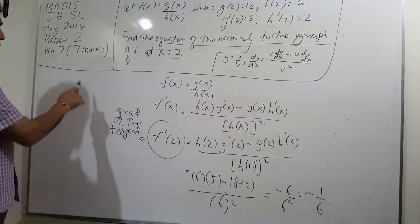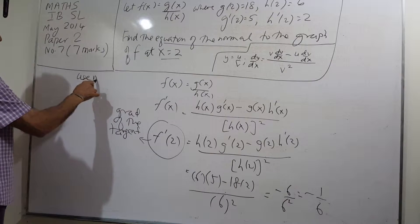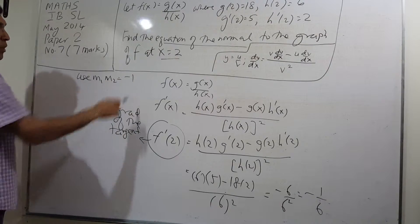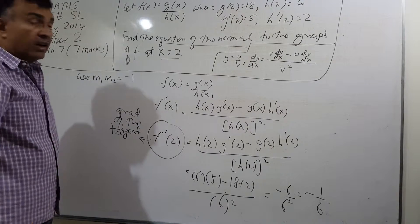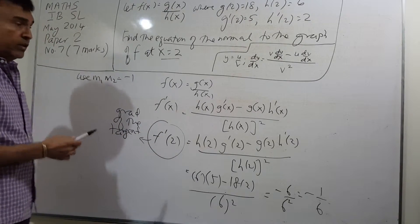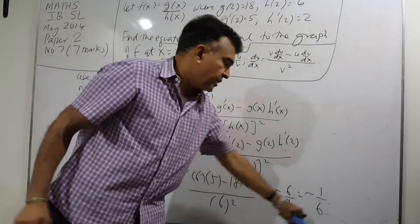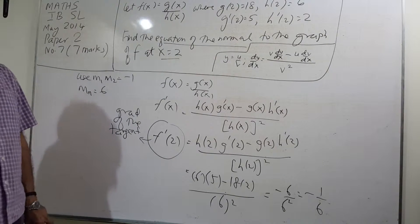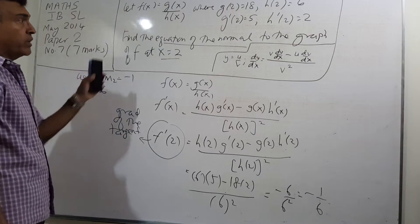We will use m1 and m2 equals negative 1. Remember this idea? If you have perpendicular lines, then the product of the gradients is negative 1. So the gradient of the normal will be negative 1 over this negative 1 over 6. So the gradient of the normal should be 6.